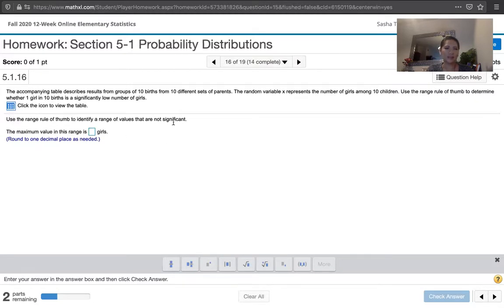And then down here again it says use the range rule of thumb to identify a range of values that are not significant. First we want the maximum value in the range, so that's the maximum value in the range of values that are not significant. So let's look at this.